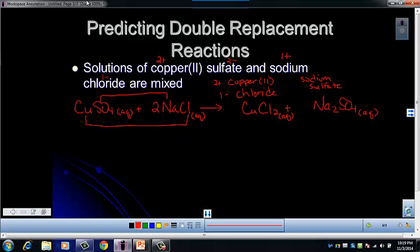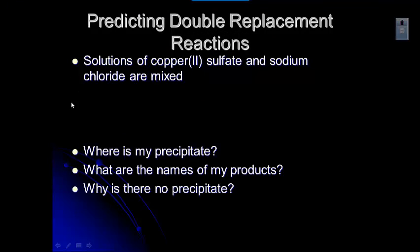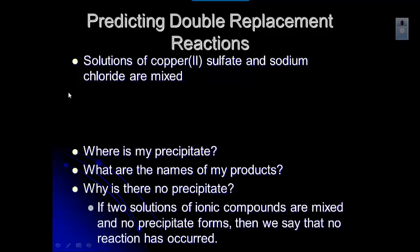There is no precipitate because when we mix two solutions of ionic compounds and no precipitate forms, we say no reaction has occurred. When ionic compounds dissolve in water, they split apart and form their ions. When they don't reform to produce a precipitate, they're just still floating around in solution. We'll learn more about this towards the end of the unit.